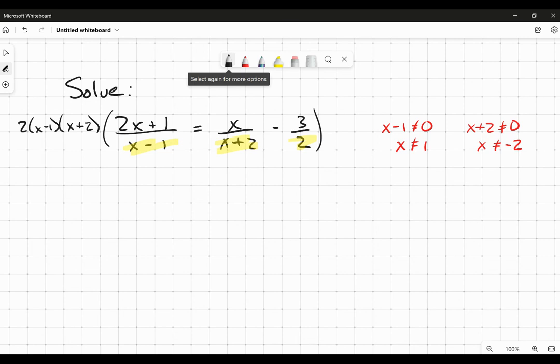So when I do, on the left hand side, the x minus 1 cancels, but I'm left with a factor of 2, x plus 2, and then 2x plus 1. On the right hand side, with that first term, the x plus 2 cancels, so we're left with 2 multiplied by x minus 1 multiplied by x. And then on the far right there, the 2s are going to cancel. So there's still that 3 there multiplied by x minus 1, x plus 2.